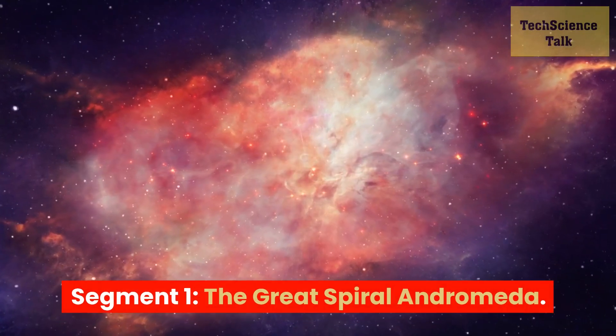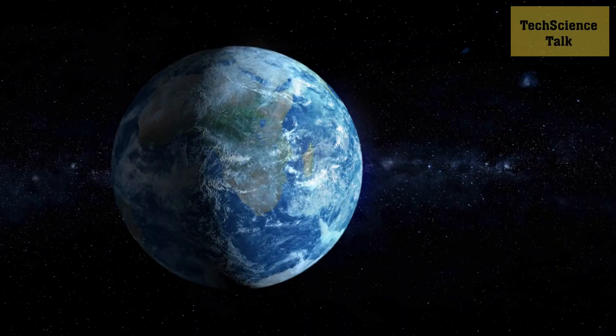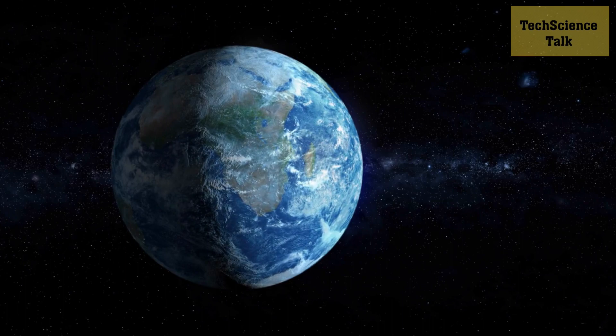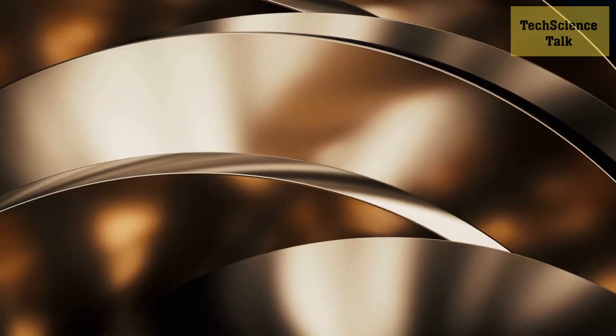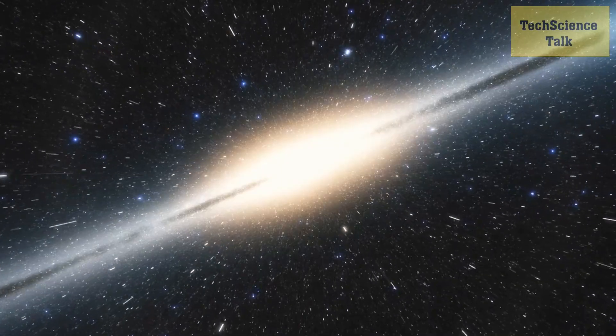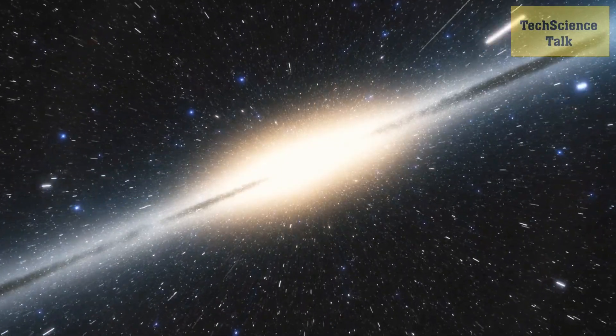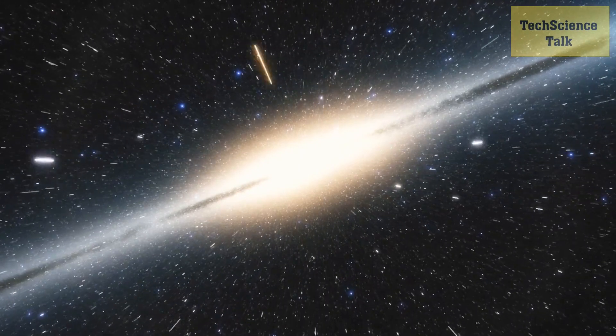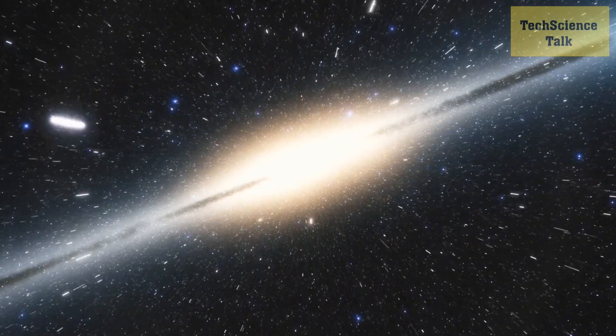Segment 1: The Great Spiral Andromeda. Our adventure begins with the sheer beauty of the Andromeda Galaxy. Behold its grandeur as we explore its majestic spiral structure. Discover how this magnificent galaxy spans a mind-boggling 220,000 light-years in diameter, making it larger than our Milky Way.